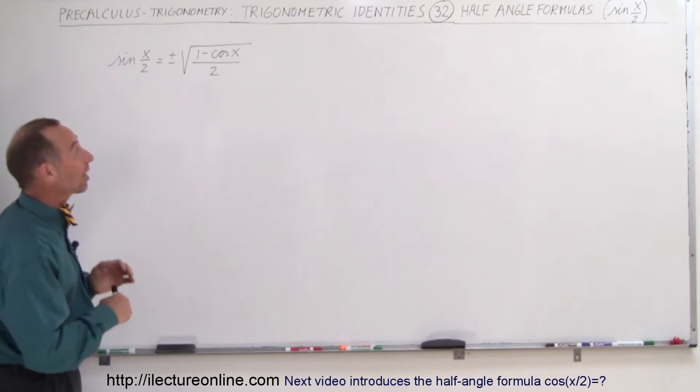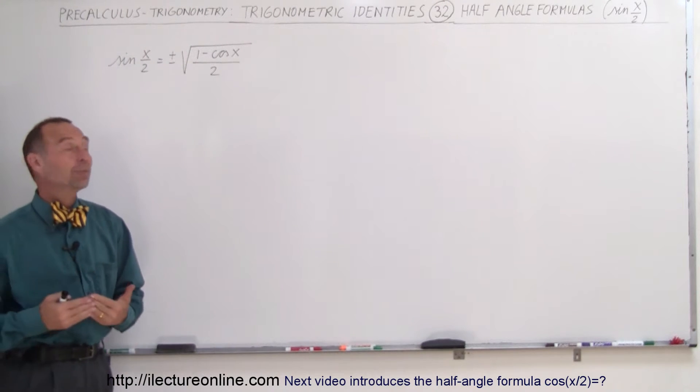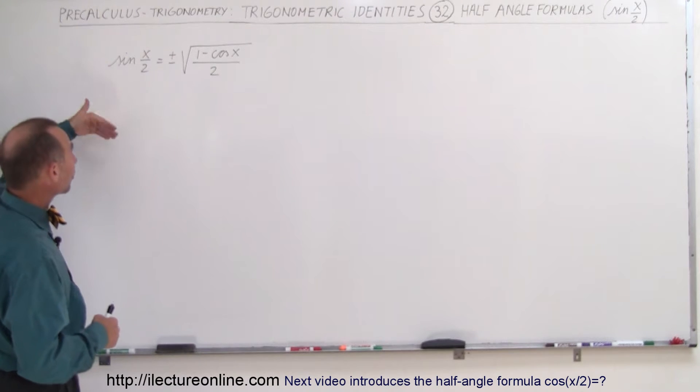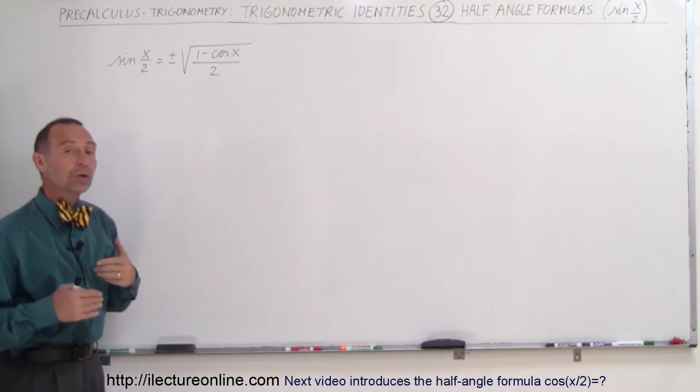Welcome to our lecture online. Now we're going to talk about what we call the half angle formulas. What is the sine, the cosine, the tangent of a half angle equal to in terms of something of the whole angle?